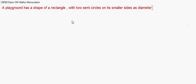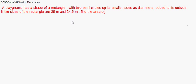A playground has a shape of a rectangle with two semi-circles on its smaller sides as diameters, added to its outside. If the sides of the rectangle are 36 meter and 24.5 meter, find the area of the playground.